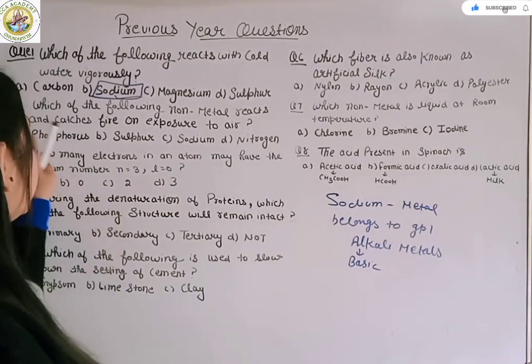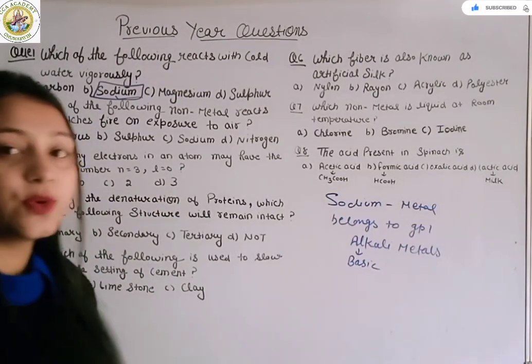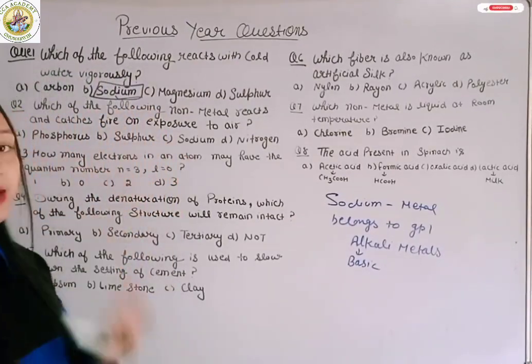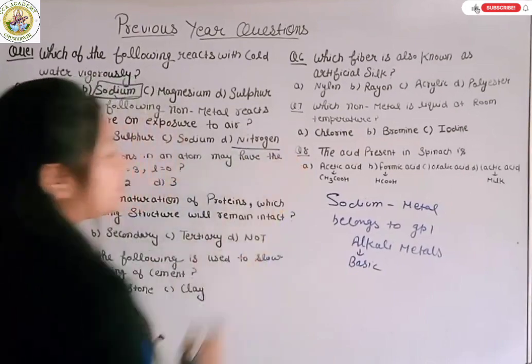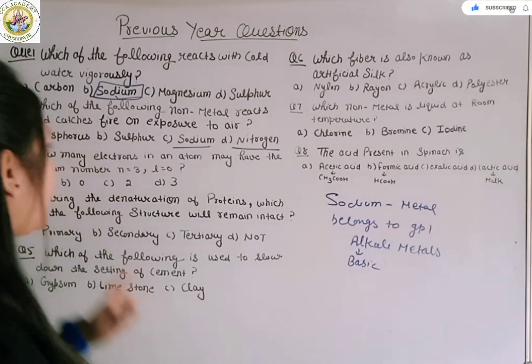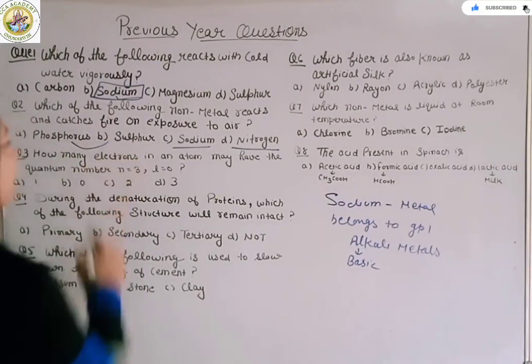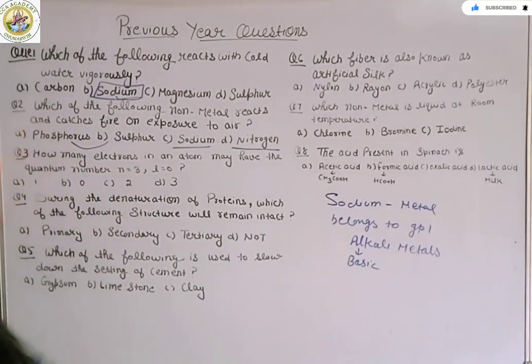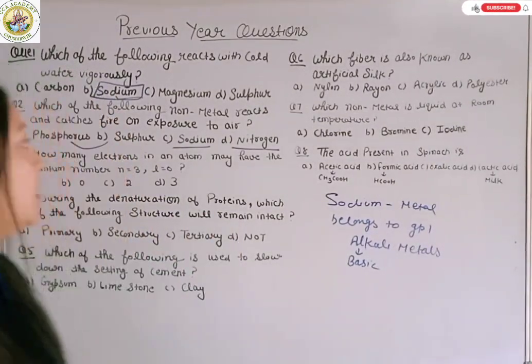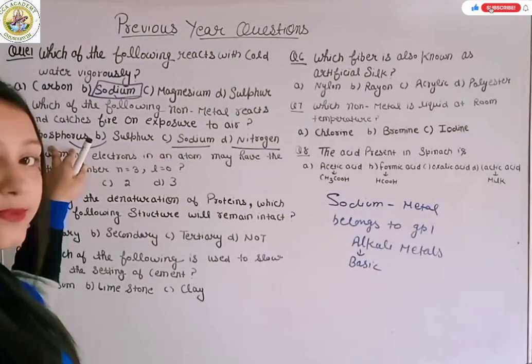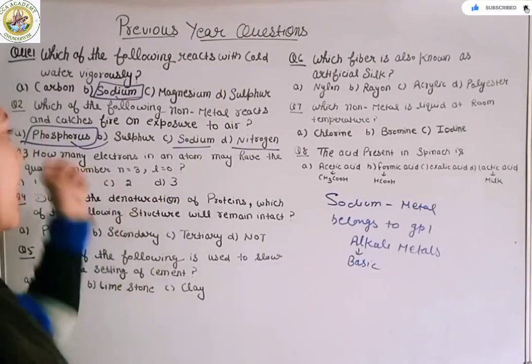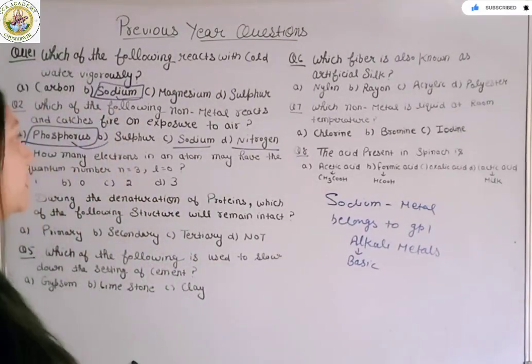The next question is which of the following non-metal reacts and catches fire on exposure to air. You have different elements: nitrogen, nitrogen is an inert gas, sodium which is a metal, then sulfur and phosphorus which are both non-metals. But the right option is phosphorus which catches fire on exposure to air.